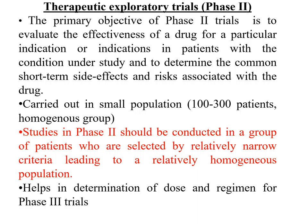Phase 2 trials are called therapeutic exploratory trials. The objective is to evaluate the effectiveness of the drug in patients for a particular indication and to determine the short-term side effects and risks associated with the drug. Such trials are carried out in a small population of 100 to 300 patients in a homogeneous group — either the same sex or the same age group. Studies in Phase 2 are conducted using relatively narrow selection criteria. At the end of these trials, the dose and dosage regimen is established and finalized for use in Phase 3 trials.